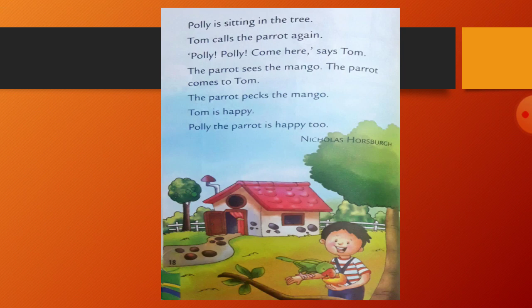Page 18. Polly is sitting in the tree. Tom calls the parrot again — Polly, Polly, come here, says Tom. The parrot sees the mango. The parrot comes to Tom. The parrot picks the mango. Tom is happy, and the parrot is happy too. So when Polly saw the mango, Polly came to Tom. This is the story of Tom's Parrot.